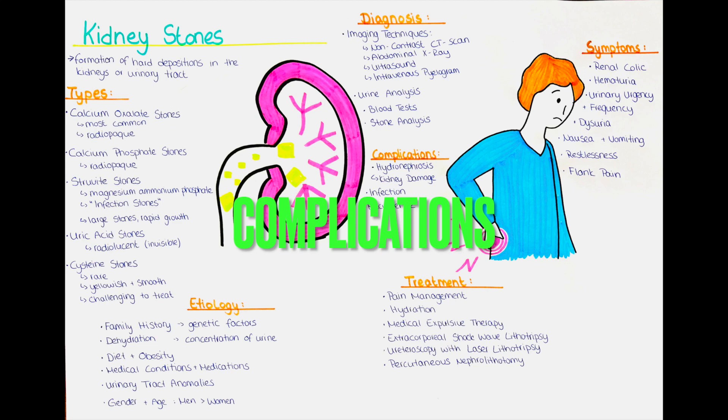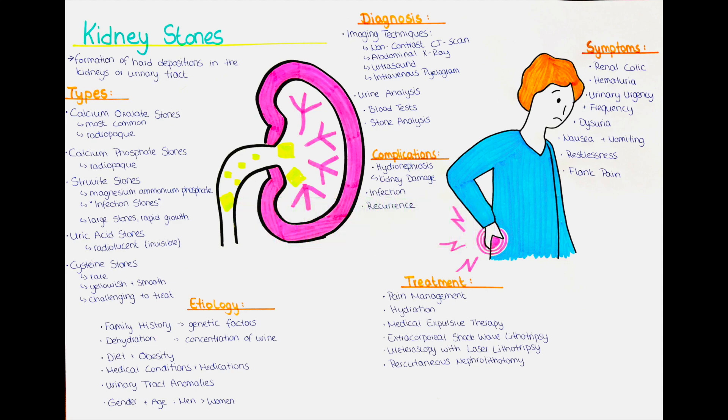What are the complications of kidney stones? Renal stones can cause urinary obstruction, leading to severe pain, hydronephrosis (distension of the kidney), and potential kidney damage. Obstructed urine flow can increase the risk of urinary tract infections. Once a patient has had a kidney stone, he or she has an increased risk of developing additional stones in the future.